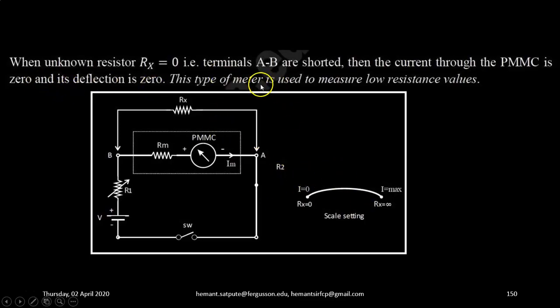So this type of meter is used to measure low resistance values. Current 0 is marked as resistance 0. It is on the left side of the scale. I hope the working is clear.